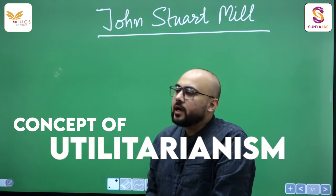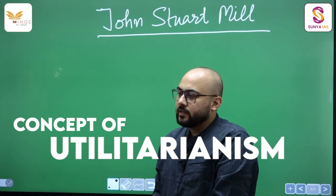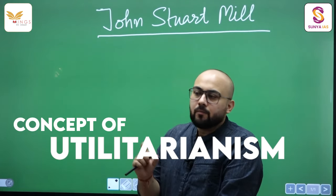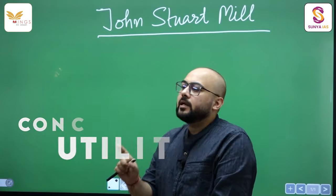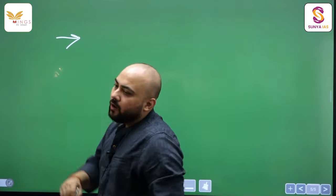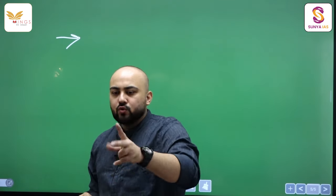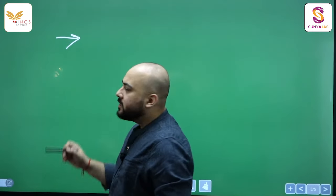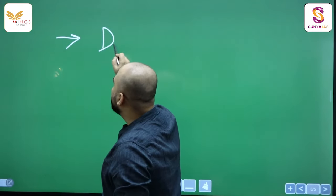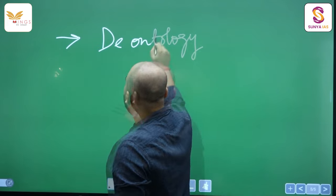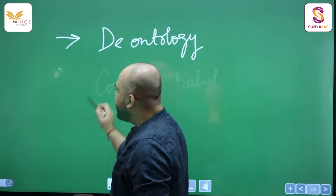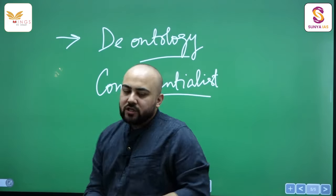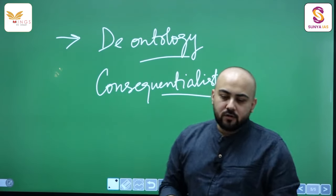The concept of utilitarianism was first propounded by Jeremy Bentham. Now there are two schools of thought: one is the deontological school of thought and the second is the consequentialist school of thought.